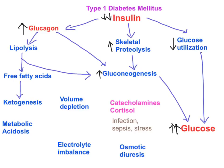In the liver, free fatty acids undergo oxidation releasing acetyl-CoA, and when the TCA cycle is saturated, acetyl-CoA is converted into acetoacetate and beta-hydroxybutyrate. Acetoacetate is an acidic molecule and beta-hydroxybutyrate is a derivative of acetoacetate. These acidic molecules accumulate in the blood, decreasing the pH and giving rise to metabolic acidosis, which can lead to electrolyte imbalance.